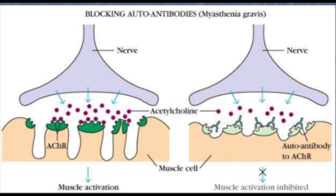So let's quickly talk about the pathology of myasthenia gravis. The idea is that myasthenia gravis is an autoimmune disease, meaning that our immune system is doing something to disrupt a normal body function. In this case, our immune system is making antibodies that actually bind to our nicotinic receptors, making it so that acetylcholine cannot bind and therefore stimulate the muscle.